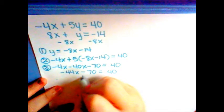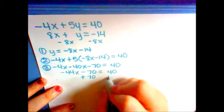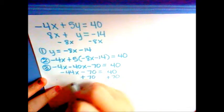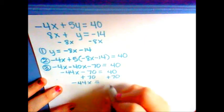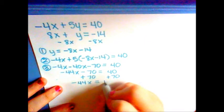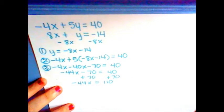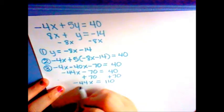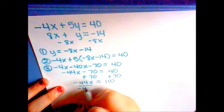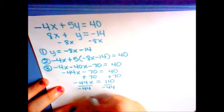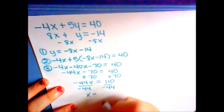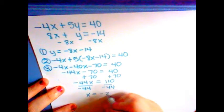We add the negative 70 to both sides. We divide the negative 44 to both sides. We get x equals negative 2.5.